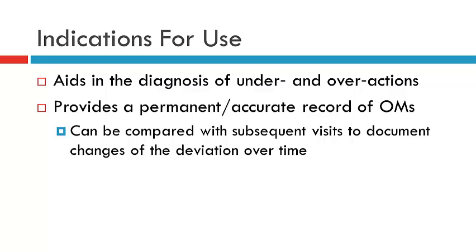When do we use a HES screen? Essentially, it's utilized when a patient has an incomitant strabismus, where there might be a mechanical restriction or a neurogenic palsy. We would like to utilize the HES chart to map the underactions and overactions observed on ocular movements. It also provides a permanent accurate record of ocular movements, making comparison between visits more accurate.